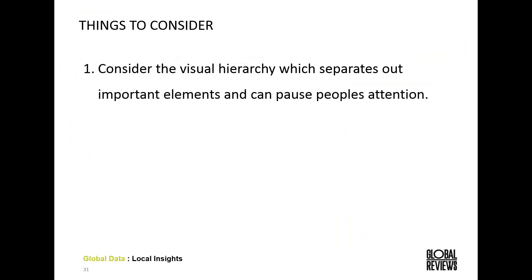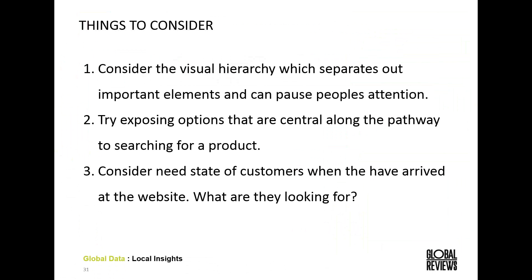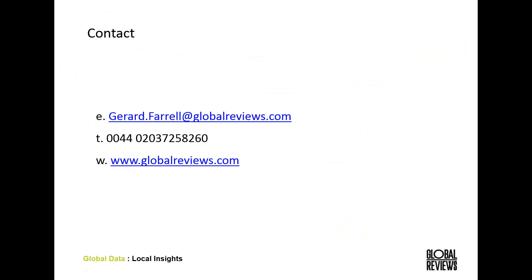Some things to consider from what we've looked at this morning: Consider visual hierarchy, which separates out important elements and can pause people's attention — this is called page friction, and it's very important. Try exposing options that are central along the pathway to searching for a product. Be careful with using drop-downs, and at all times bear in mind the call to action and balancing funnel pages and discovery pages. Consider the need state of customers when they arrive at your website — what are they looking for and how would you communicate that? Benefit buttons rather than just functional buttons can also be very important.